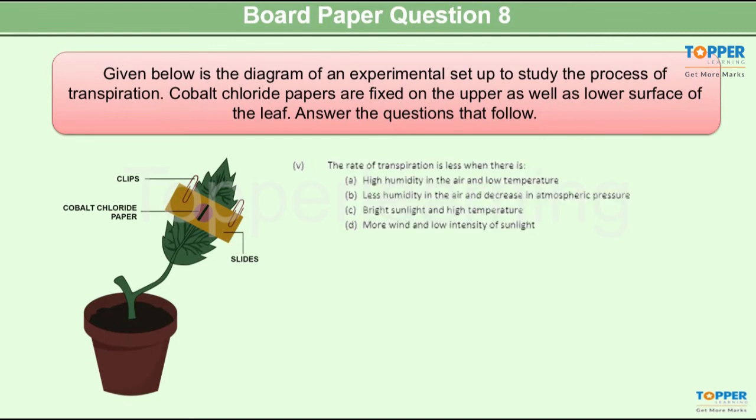And the last question. The rate of transpiration is less when? Correct answer is option A. High humidity and low temperature. In the presence of high humidity transpiration decreases and when there is low temperature the rate of transpiration decreases. Obviously because the rate of loss of water and the rate of evaporation is also low. So this was about this particular diagram based question asked in this year's ICSE class 10 biology paper.